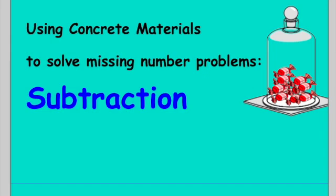The missing numbers are often in three places. You can have your missing number at the end, you can have your missing number at the beginning, or you can have your missing number in the middle. I'm going to show you today how to use concrete materials — so you can get pebbles, pasta shells, Lego pieces, marbles, anything that you've got, coins, pennies — a lot of little things that you can use for counting. So let's have a little look at the first one.